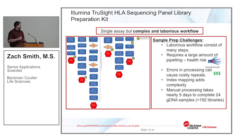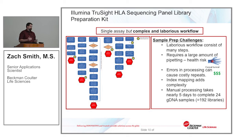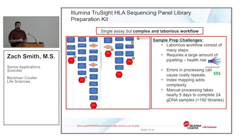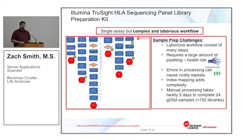Illumina developed the TruSight HLA sequencing panel, and it's quite a long workflow. Starting with genomic DNA, you perform loci-specific PCR — eight PCR amplification reactions per genomic DNA sample, covering about 11 HLA loci. The PCR reactions are then cleaned up, amplicons normalized, tagmented, and turned into Nextera libraries, which are then normalized and pooled to a single tube. This is a very complex NGS assay, but it replaces something like 30 different Sanger assays currently used for HLA typing — a significant improvement, though the workflow itself remains extremely complex.